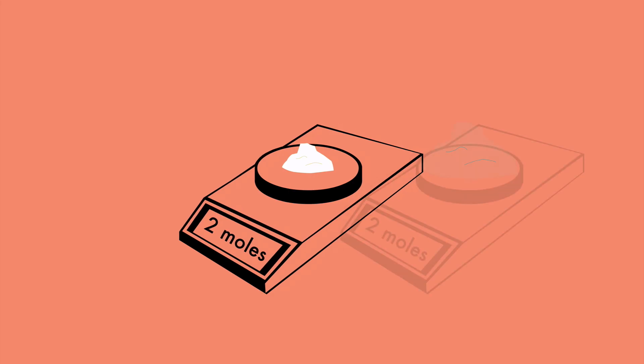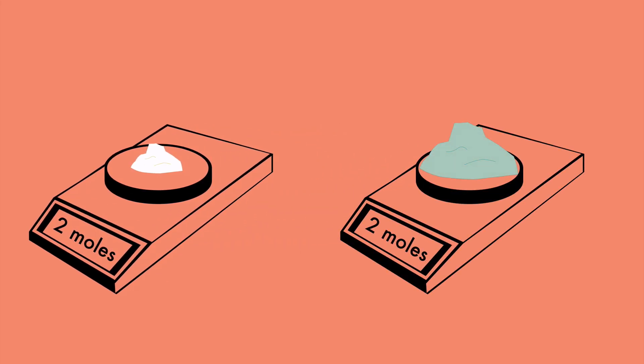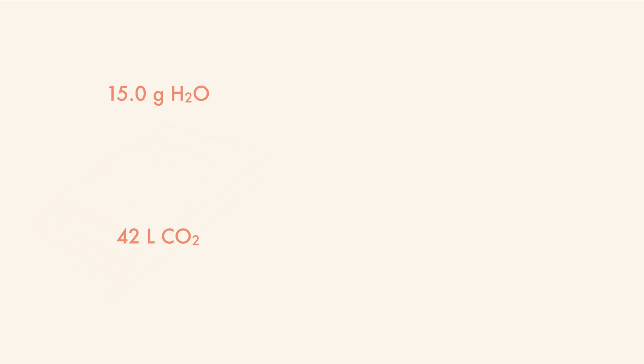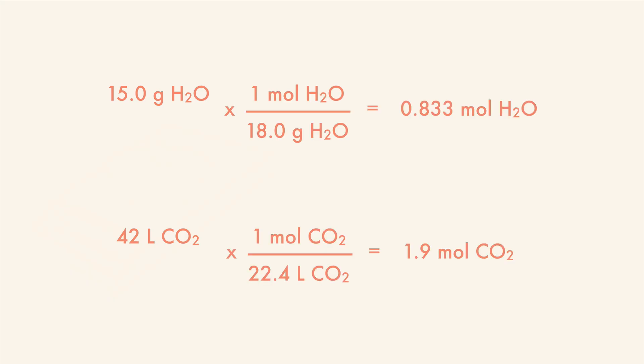A mole of different substances will have different masses and different volumes. So it's a bit like trying to create a scale that will tell you how many elephants or bananas or pennies are there — it's just impossible. So to deal with this, we measure mass or volume of a substance and simply convert it into moles using a bit of dimensional analysis.